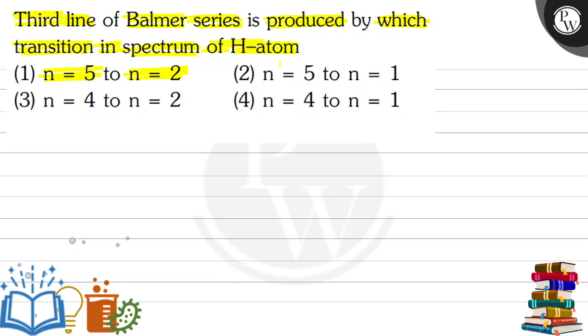Option two: n equals to five to n equals to one. Option three: n equals to four to n equals to two. And option four: n equals to four to n equals to one.